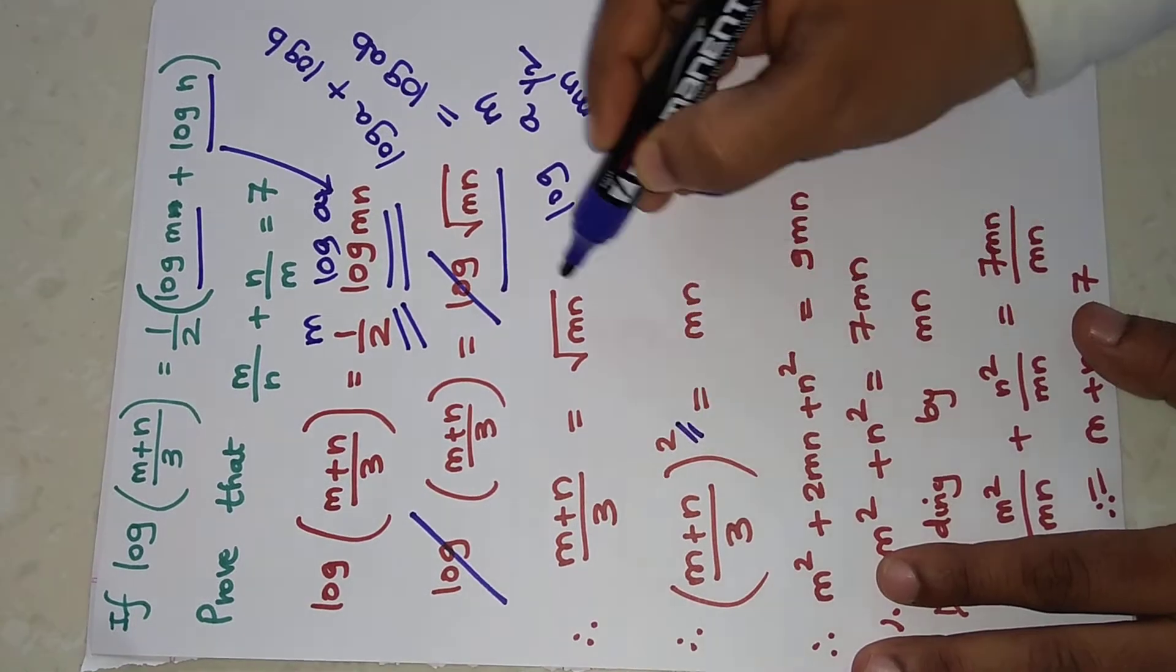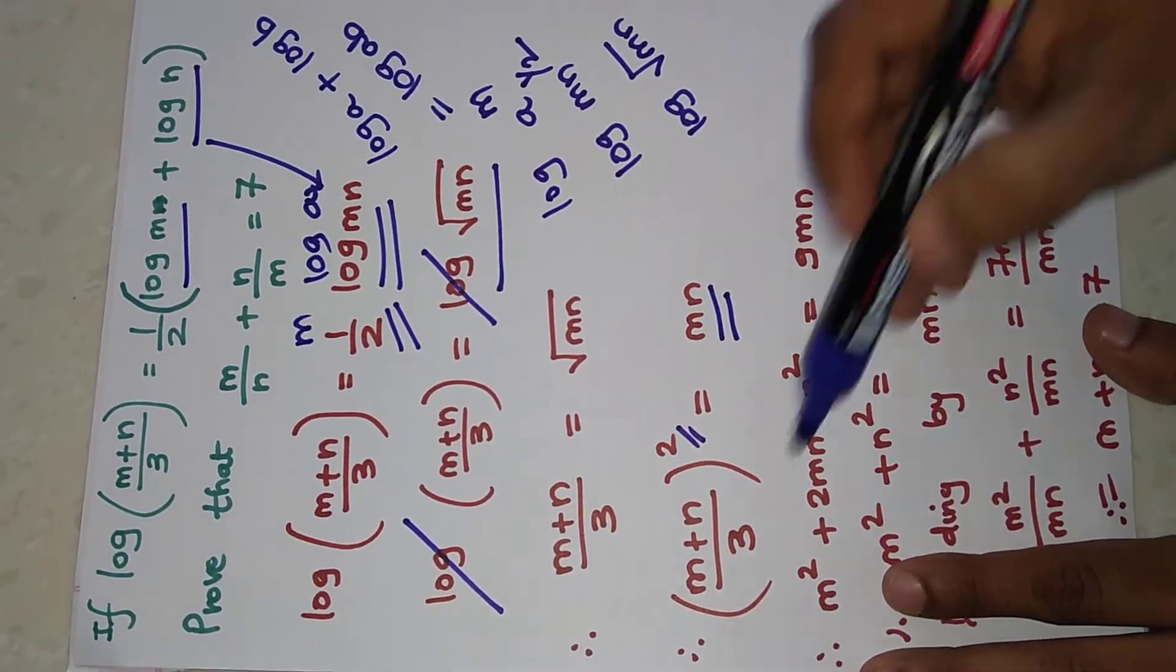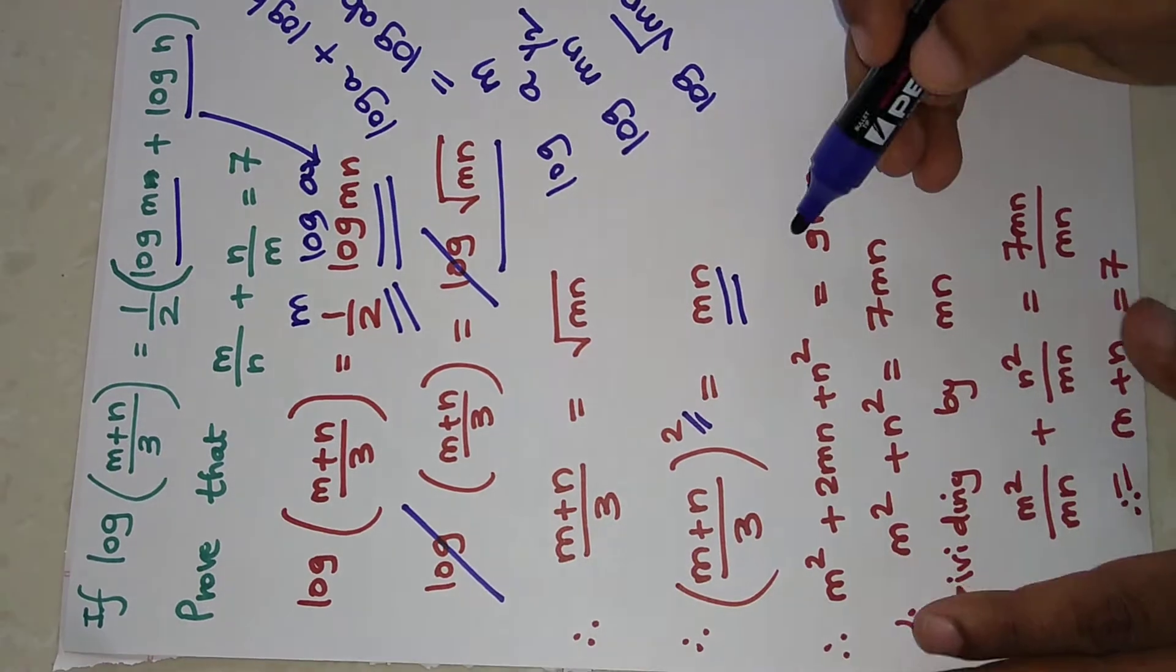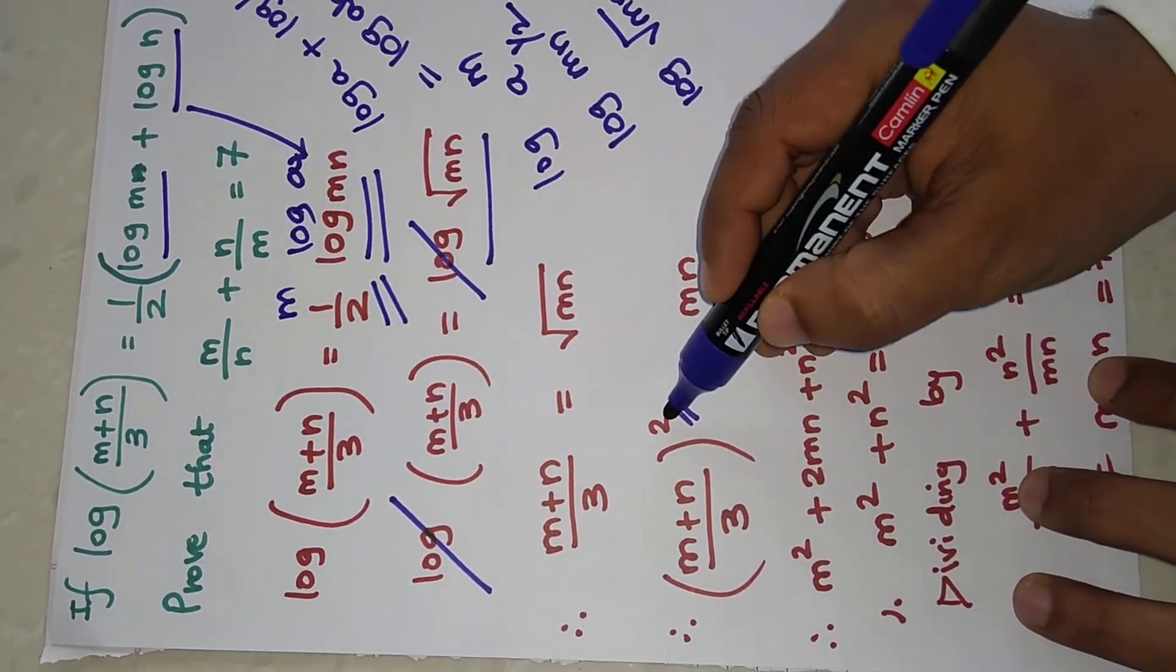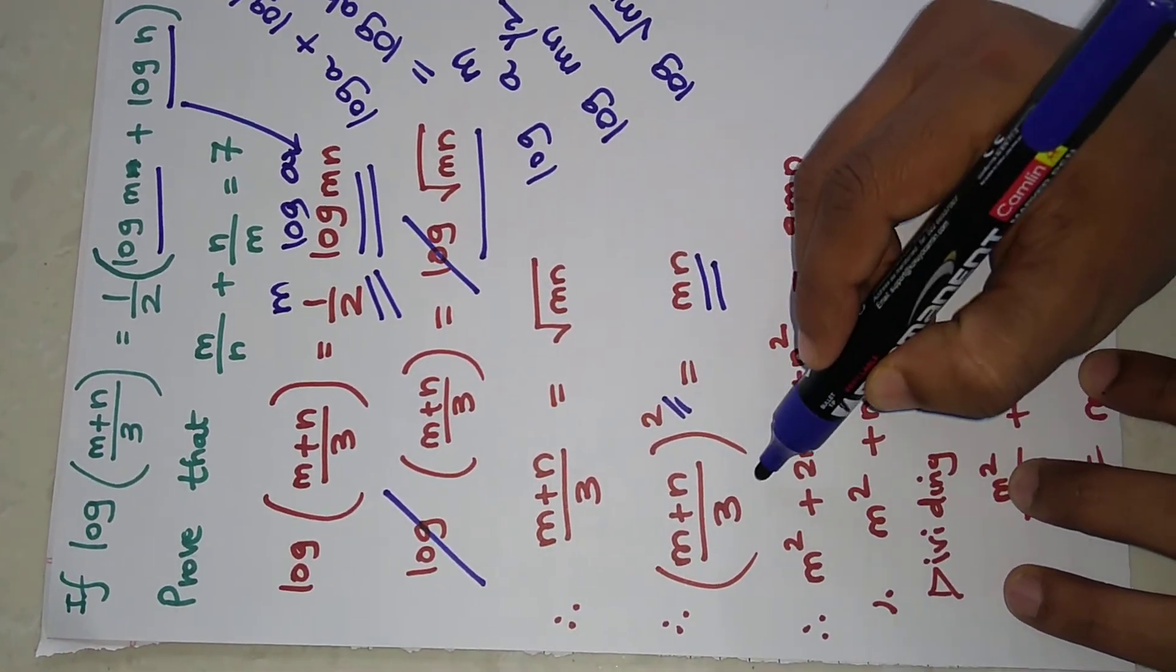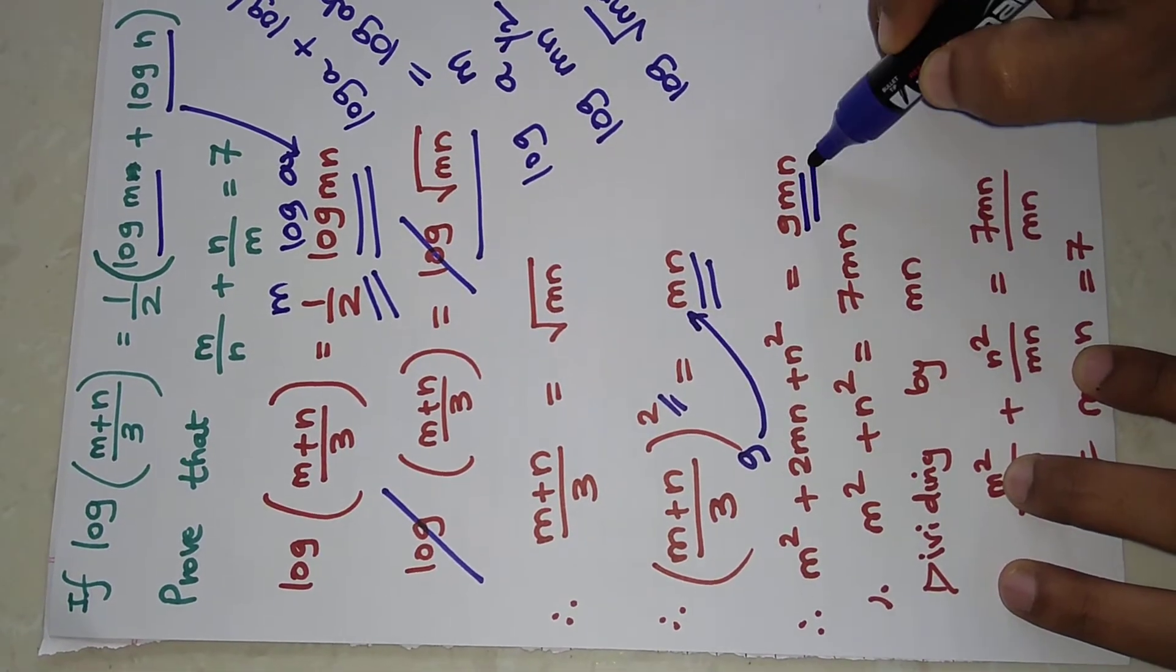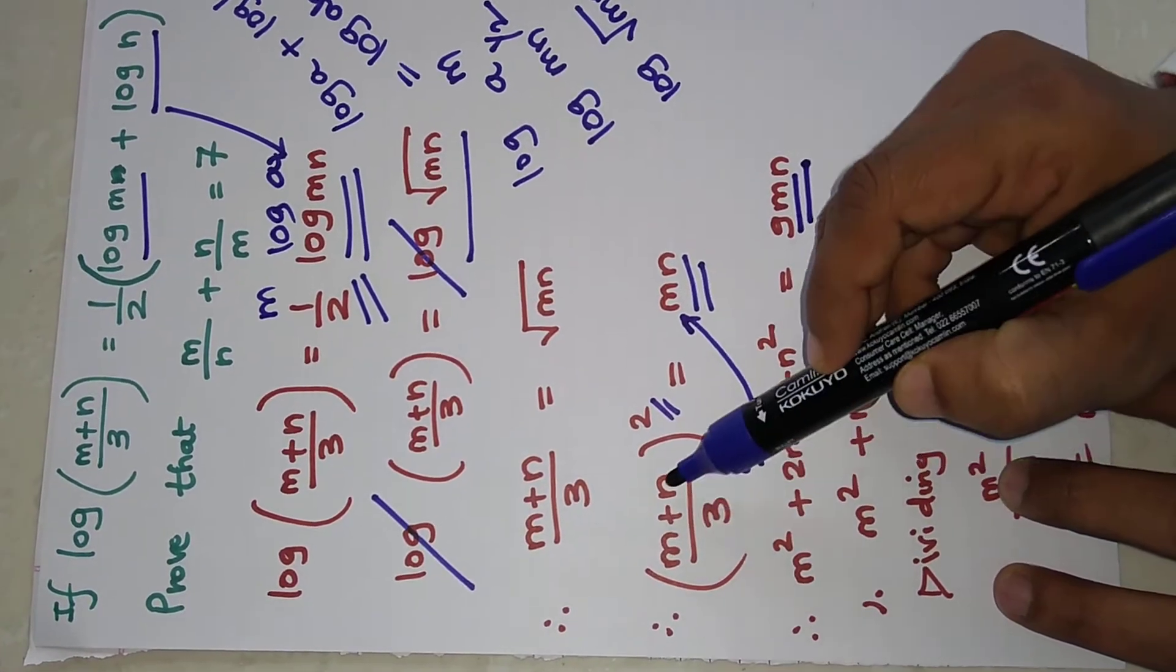Squaring on both sides, the right-hand side we will have only mn. This will be (m+n)/3 squared. So 3 squared is 9, and this 9 on this side is 9mn.